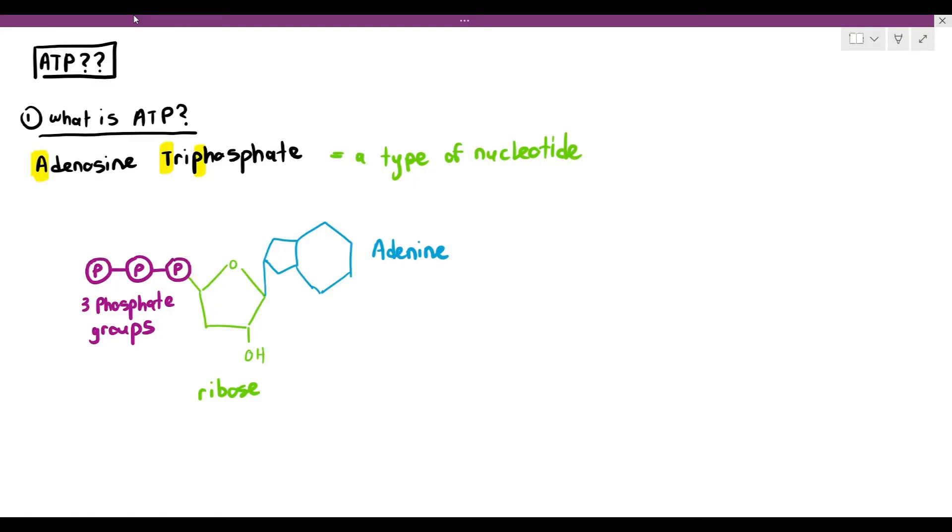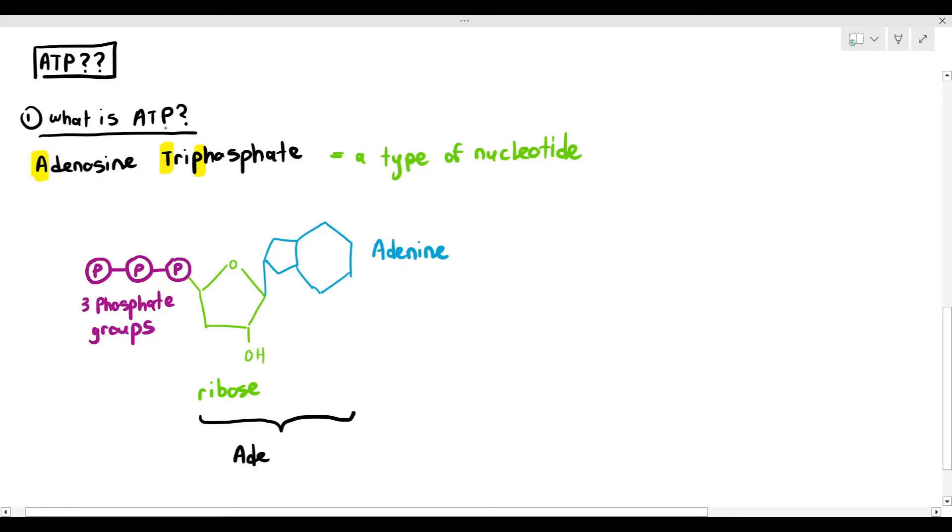And another very important thing about ATP is it doesn't just have one phosphate group. It has three phosphate groups. That's why it's triphosphate. And adenine and ribose collectively together are known as adenosine. That is why the name is adenosine triphosphate.